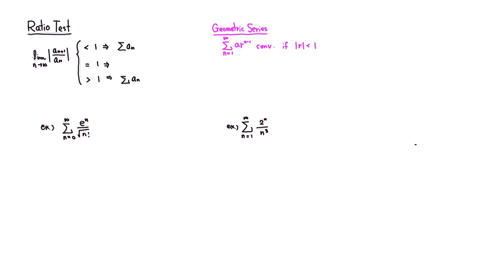Similar to a geometric series, if this ratio between two consecutive terms is less than 1, then we know that the summation — actually the summation even with the absolute value sign — converges. If the limit came out to be exactly equal to 1, this is an unfortunate case and it is inconclusive. It could converge or it could diverge, depending on the problem. So if you get a 1 out of the ratio test, we have to use a different test to make a conclusion.